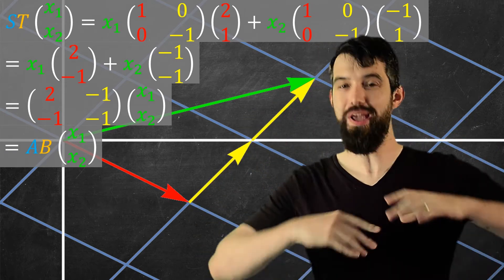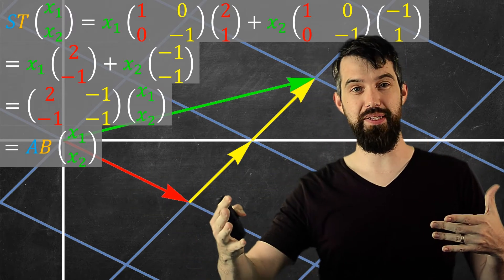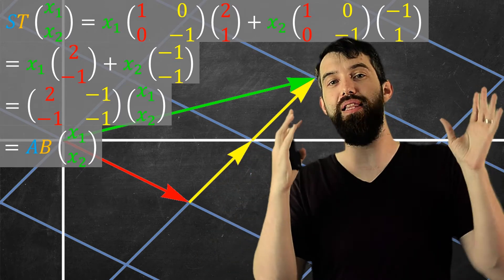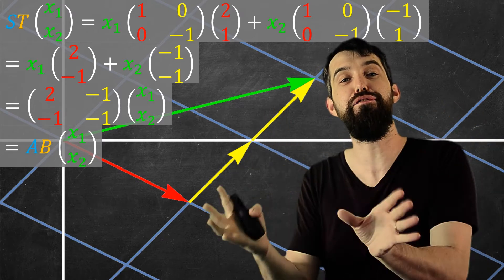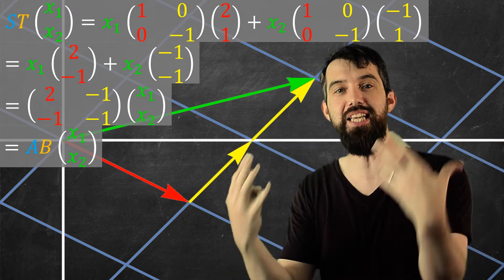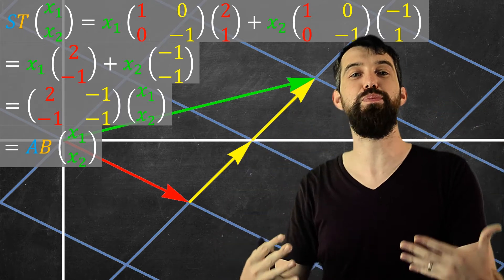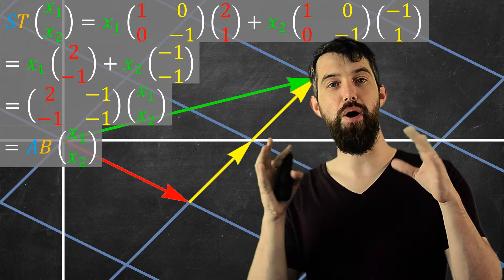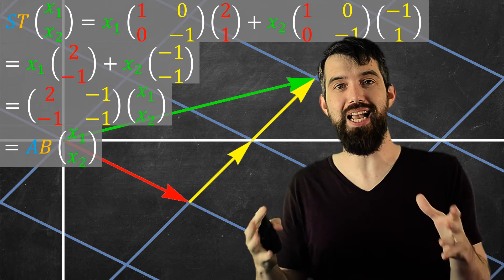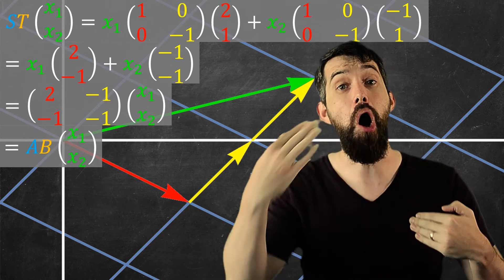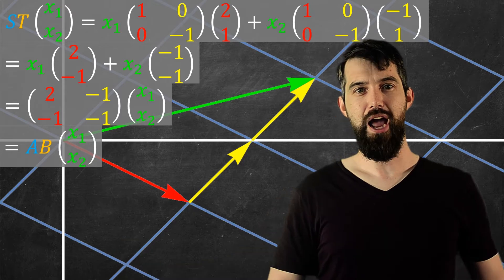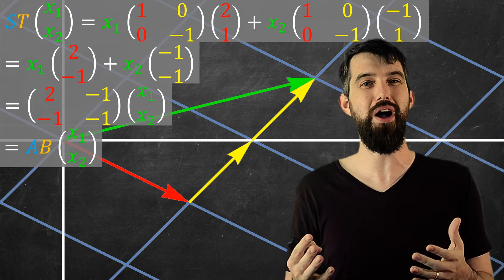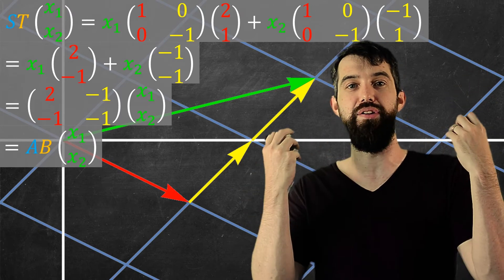So what have we seen? We can take a vector, write it as a linear combination of the standard basis vectors, apply a bunch of different transformations — the same coefficients throughout but different vectors. The vectors first become T applied to the standard basis vectors, and then S applied to whatever T did. That's geometrically what matrix multiplication represents: the matrix that comes from the composition of different transformations. How to compute the AB matrix is covered in a separate video — it's just an algebraic computation.